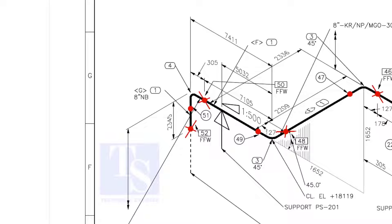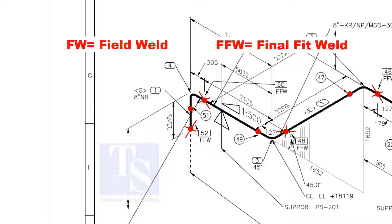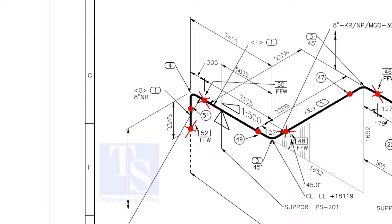In the drawing, you can see the terms like FW and FFW, what is this? FW stands for field weld. FFW means final fit weld. That is, an additional length of pipe is added to the calculated dimension, add an FFW for field trim allowance.